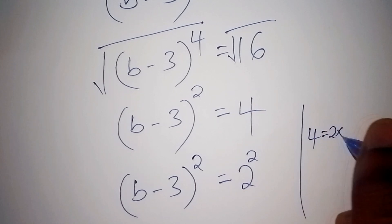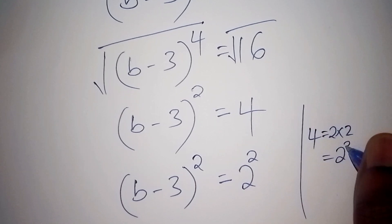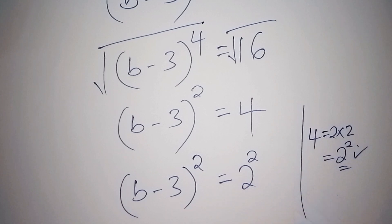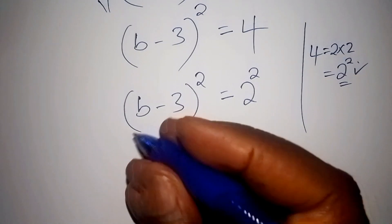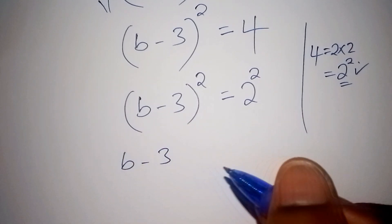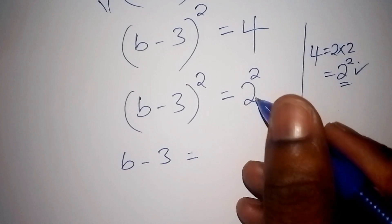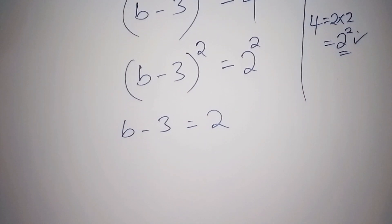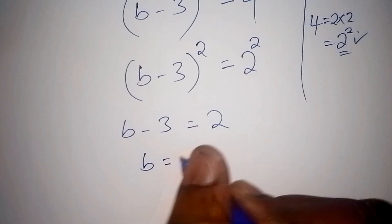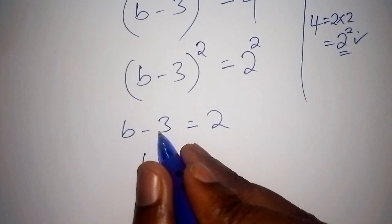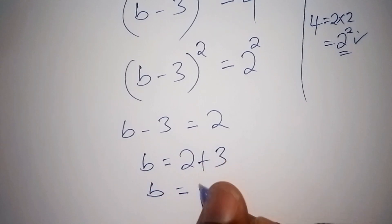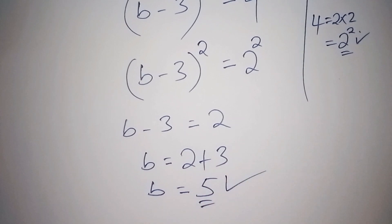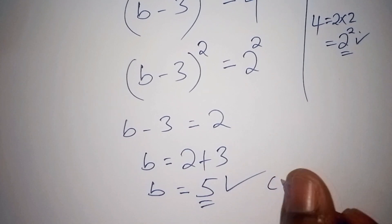Taking 4 equals 2 multiplied by 2, that gives us 2 to the power of 2. Since both sides now have the power of 2, we can omit the power of 2, leaving B minus 3 alone. So B minus 3 is equals to 2. Now solving for B: when we cross the equals sign the minus 3 becomes plus 3, so B equals 2 plus 3, which is 5. Our final answer is 5.